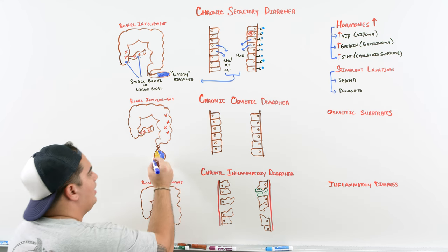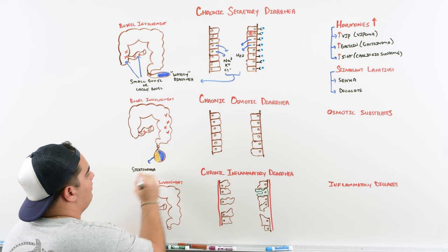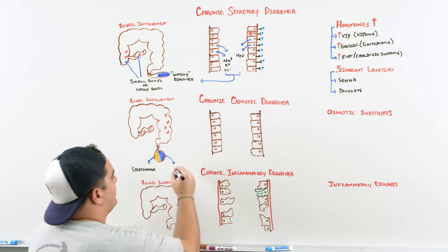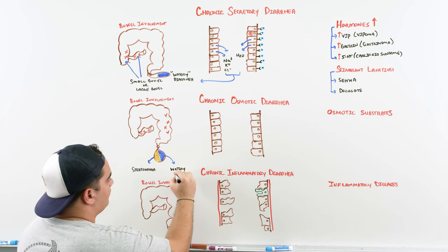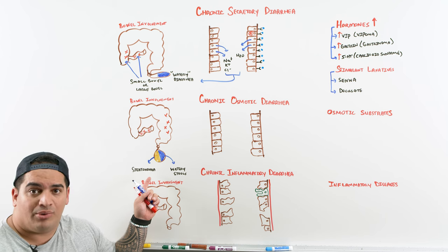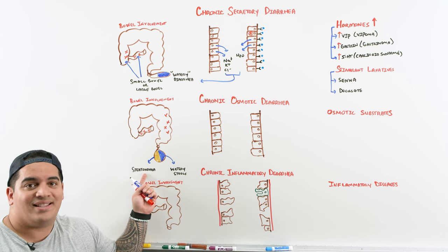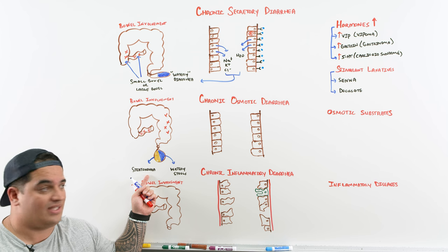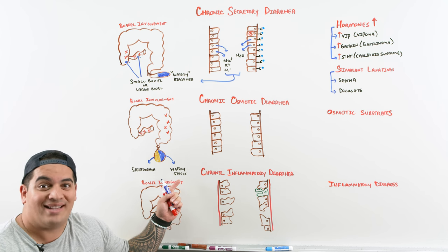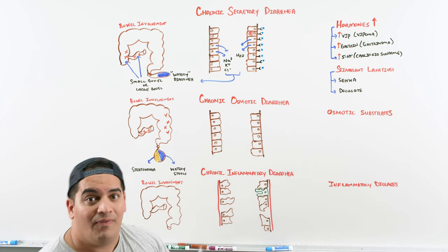Steatorrhea is seen in diseases like celiac disease, pancreatic insufficiency, Whipple's disease, or tropical sprue — global malabsorption syndromes where lots of fat is lost in the stool. If the stool is just watery rather than fatty, it's probably some type of laxative, not malabsorption.